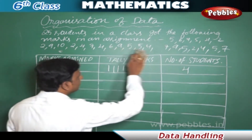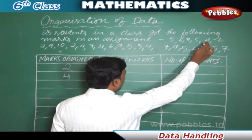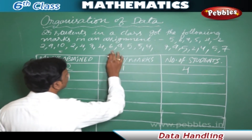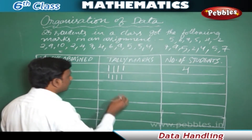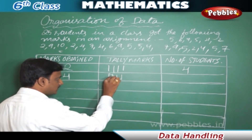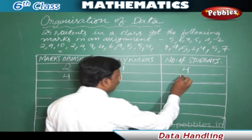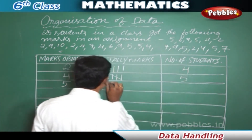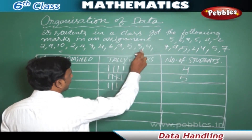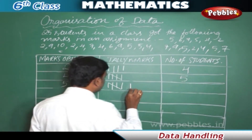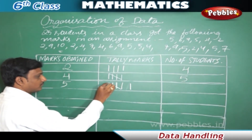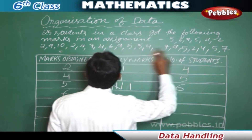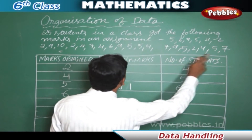Four marks: five students got four marks. We place four tally marks straight and the fifth as a diagonal cross line. Five marks: six students got five marks. Six marks: two students got six marks.